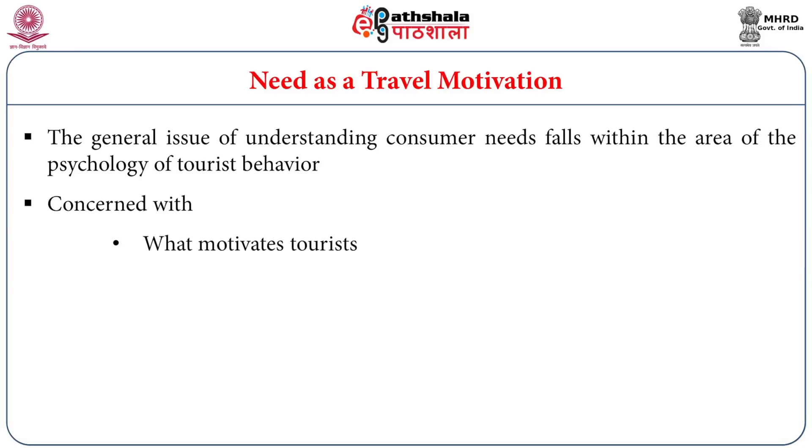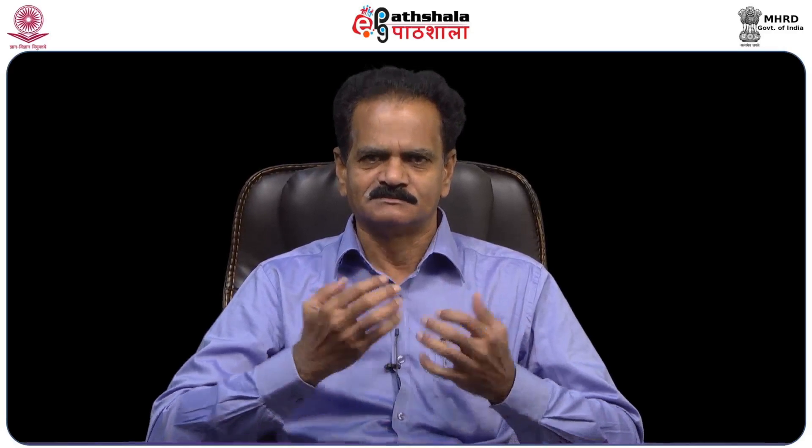What motivates tourists? How do they make travel decisions? Travel decisions are not easy. For example, I may want to go to Taj Mahal, my wife wants to go to Manasarovar, and my children want to visit Ooty and Kodaikanal. Within one small family, three types of decisions are taken. Taking a unilateral decision is very important and is called the process of tourism decision-making.